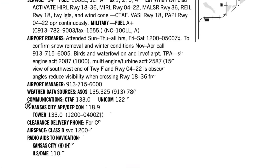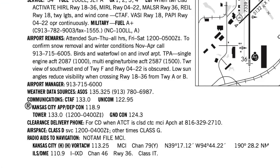Let's take a quick peek over here in the chart supplement. As I mentioned before, the tower only operates part-time, and you can see the times here. When the tower closes, the Class Delta airspace reverts to Class Golf. Then, once that happens, we'll make our CTAF calls over on 133.0.